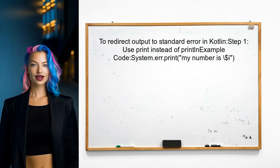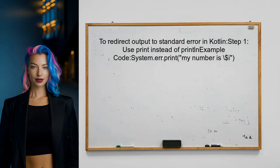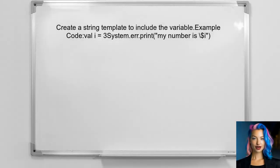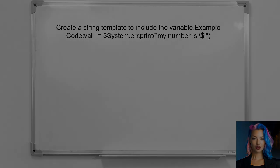To redirect output to standard error in Kotlin, the user can use the print function instead of println. This allows for more control over where the output goes. Next, the user should create a string template to include the variable in the output. This is done by using the dollar sign followed by the variable name.